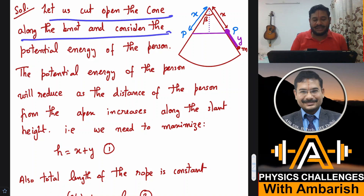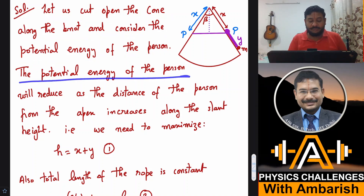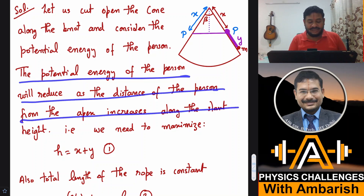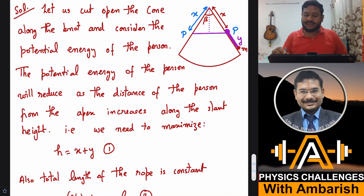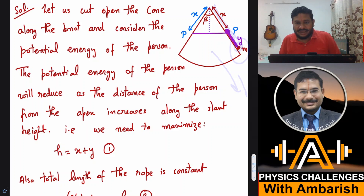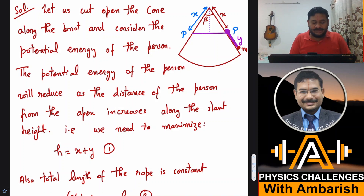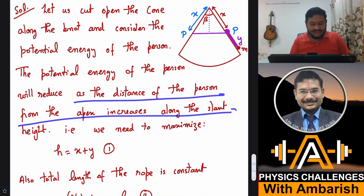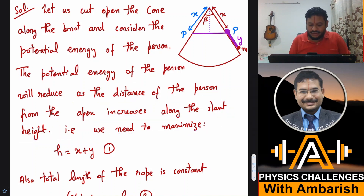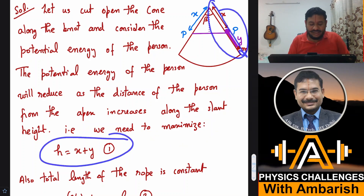Let us cut open the cone along the knot and consider the potential energy of the person. The potential energy will reduce as the distance of the person from the apex increases along the slant height. As the person slides further down, his potential energy decreases. So potential energy is just a function of this distance M from the apex — the greater this distance, the smaller the potential energy. We need to maximize H, which equals X plus Y, to find the equilibrium configuration.